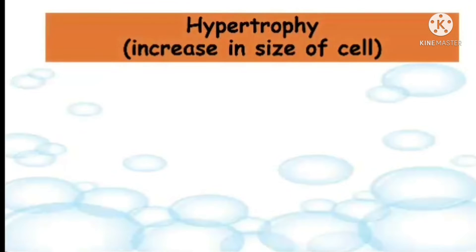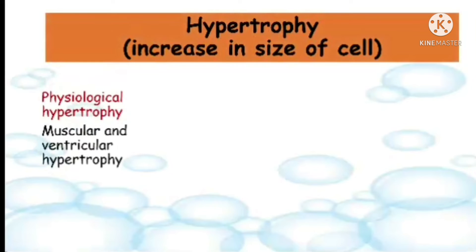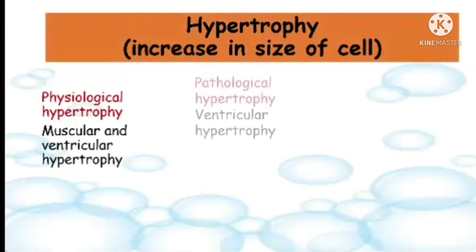Hypertrophy is an increase in the size of the cell. It has three types. The first is physiological hypertrophy, where there is an increase in the size of the cell because of increased workload or exercise. The examples are muscular hypertrophy and ventricular hypertrophy.